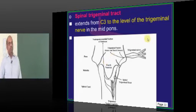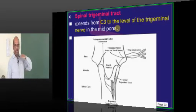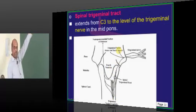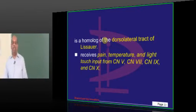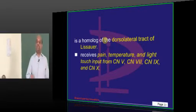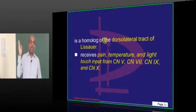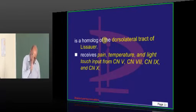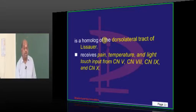The spinal trigeminal tract typically extends from the level of C3 in the cervical spinal cord up to the trigeminal nerve in the mid-pons. Just like the dorsolateral tract of Lissauer, this is a homologue for that — it carries uncrossed fibers bringing pain and temperature from the ipsilateral half of the face until the spinal nucleus of trigeminal. From there the fibers decussate and go to the contralateral thalamus.